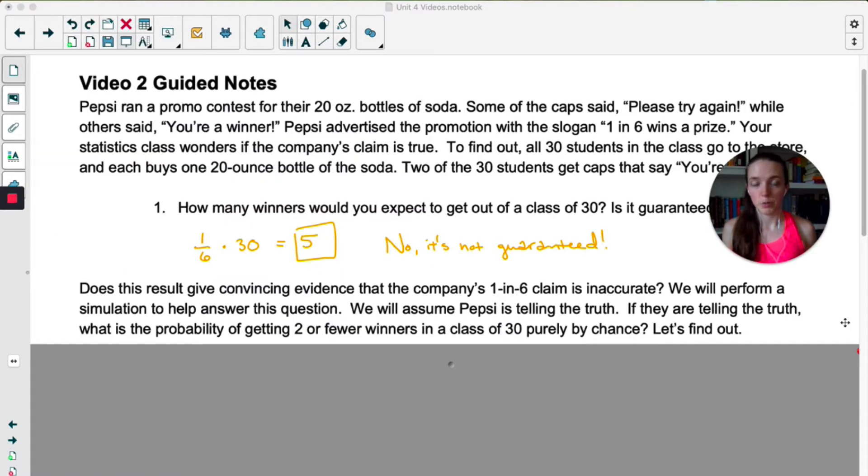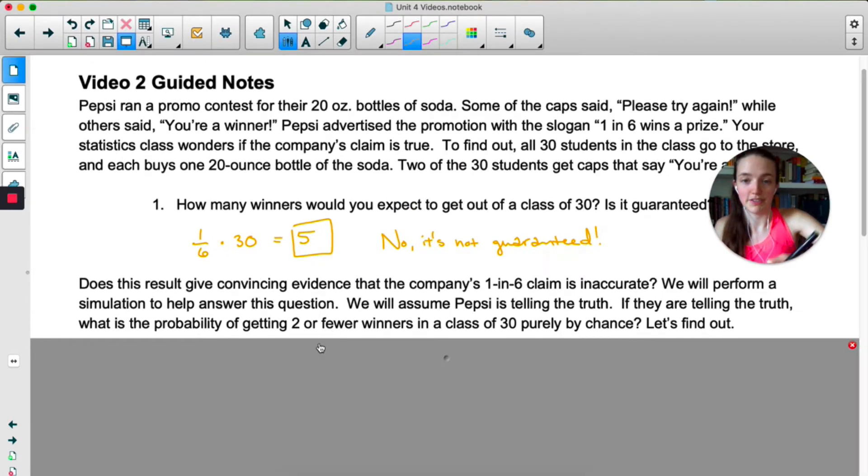To answer this question we're going to be performing a simulation. A simulation is just one way of solving a probability question. We're basically going to come up with a model for this pop contest and we'll see how often we get only two winners out of 30. Here's the premise: we are going to assume that Pepsi is telling the truth. If they're telling the truth, what's the probability of getting two or fewer winners in a class of 30 purely by chance?